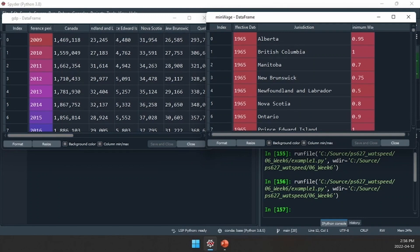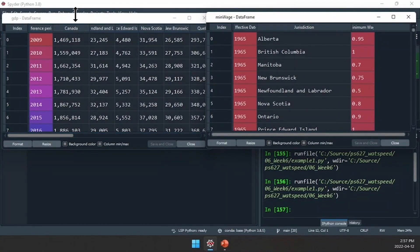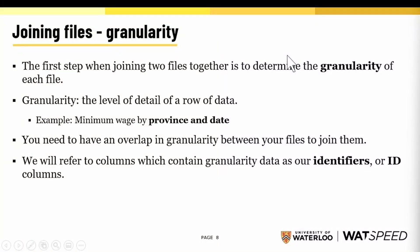Before we can join these two files together, we need to figure out the granularity of these two files. By granularity, we're talking about the level of detail of a row of data. In our minimum wage data frame, we saw the minimum wage by province and date. In our GDP file, we have date, and technically we have province, but each column is a different province. So it looks like while we'll need to do some transformation, we do seem to have an overlap in granularity: date and province. We will refer to columns containing our granularity data as our identifiers or ID columns.